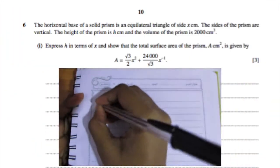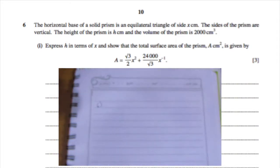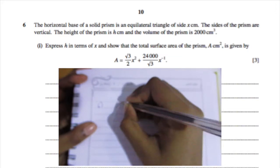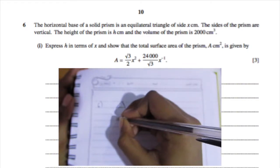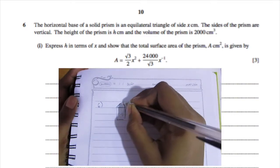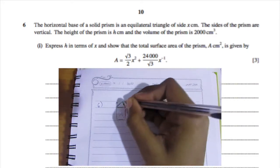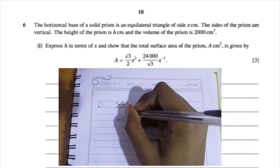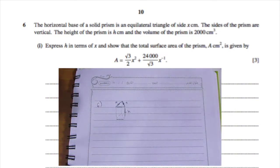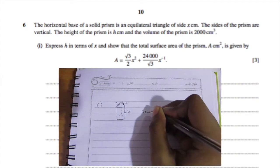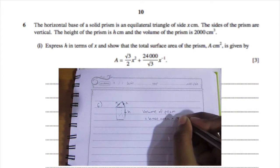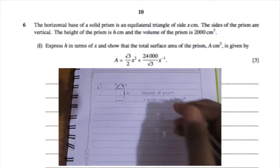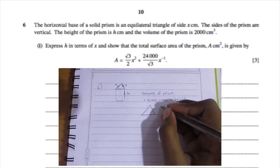On to question six. The horizontal base of a solid prism is an equilateral triangle of side x cm. The sides of the prism are vertical, the height is h cm, and the volume is 2000 cm³. We need to express h in terms of x and show that the total surface area A cm² is given by a formula. I'll draw it out to visualize it. The volume = base area × height, and the base is an equilateral triangle with all angles 60° since 180 ÷ 3 = 60.